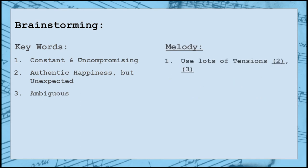For melody, I want to use lots of tension tones that don't necessarily appear in the harmony below. This can help create a more ambiguous and slightly more dissonant sound that would work well for items 2 and 3 on my list of key words. Other than this, I don't really have any specific ideas, other than that it could be fun to work with some large leaps within the melody, and not just typical stepwise movement.